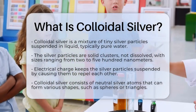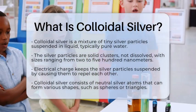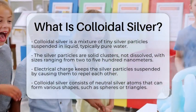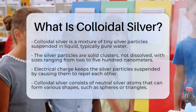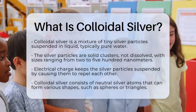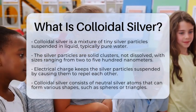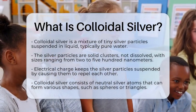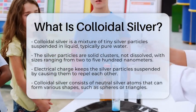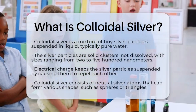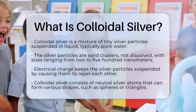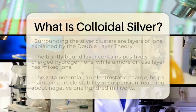The size of these clusters can vary, typically ranging from about 200 to 500 nanometers. The reason these silver particles stay suspended is due to their electrical charge. This charge causes them to repel each other, preventing them from clumping together or settling at the bottom of the liquid. In terms of chemistry, colloidal silver consists of neutral silver atoms that can form different shapes, like spheres or triangles.